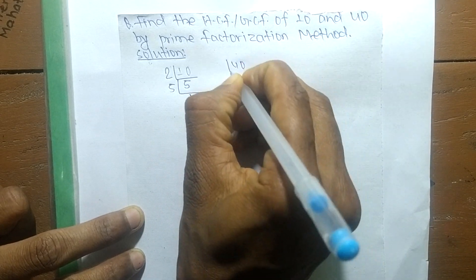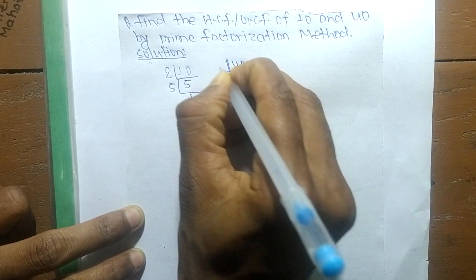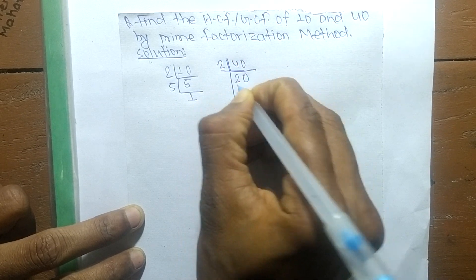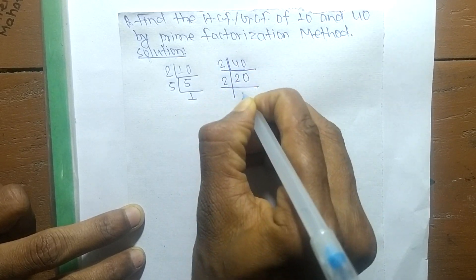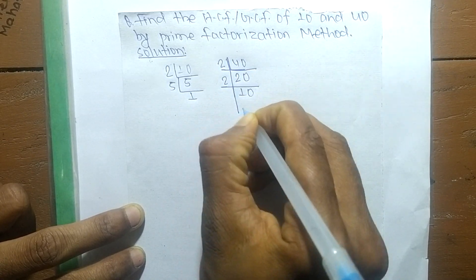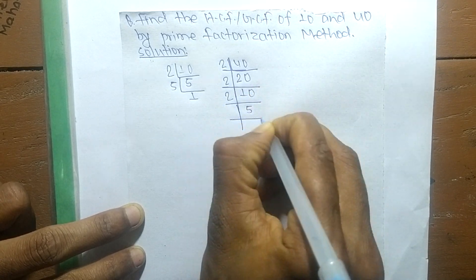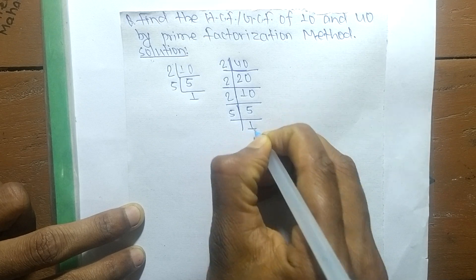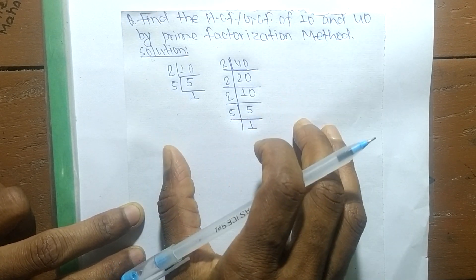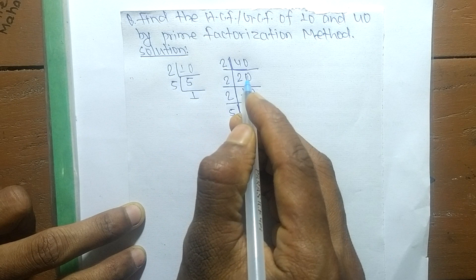In the same way, the prime factors of 40 is 2 times 20 equals 40, 2 times 10 equals 20, 2 times 5 equals 10, and 5 times 1 equals 5. After finding out the prime factors of 10 and 40...